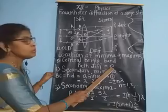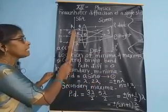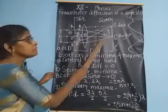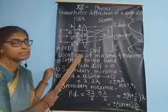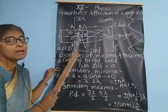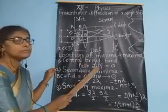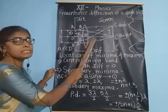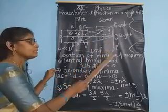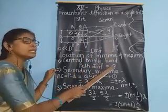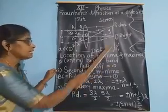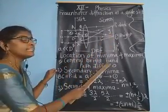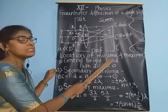At point P0, we consider just the two extreme rays AP0 and BP0. They have equal optical path, hence the path difference between them is equal to zero. So all rays traveling parallel to the optical axis have zero path difference at P0, and we get a bright point called the central bright band, also called the principal maximum.